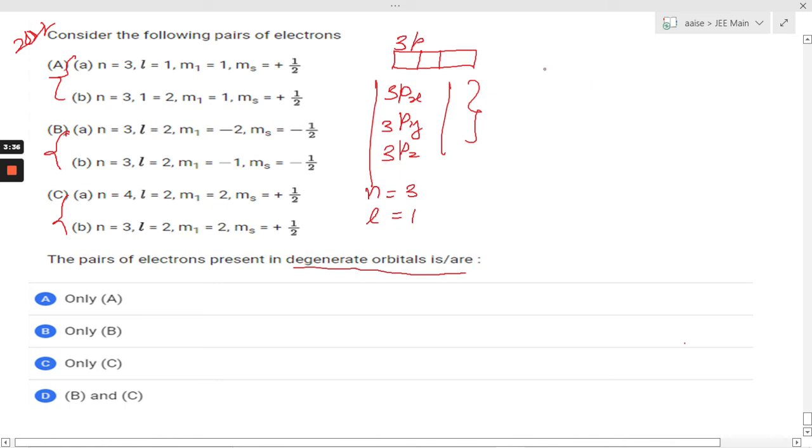So for degenerate orbitals, n plus l must be same and m must be different.